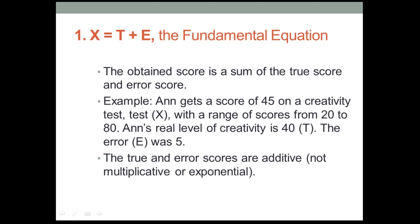So for example, let's say that Anne gets a score of 45 on a test of creativity, which we'll call test X. And let's say that test X further has a range of scores from 20 to 80. That's not an equation, but we'll just say that for the sake of this example. Now, Anne's obtained score is 45. That's the score she got. But let's say that her real level of creativity, her true score, is 40. That would leave her with an error of five, or more precisely, the test included an error of five points, and it registered her obtained score as five points too high.